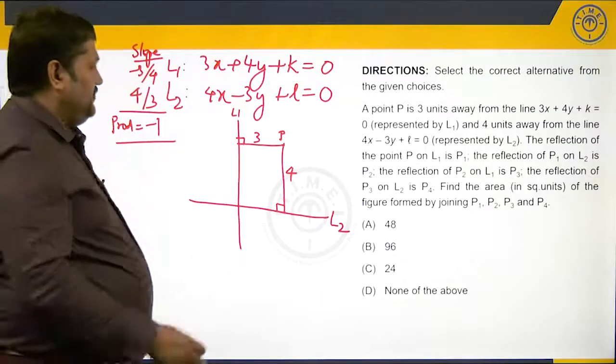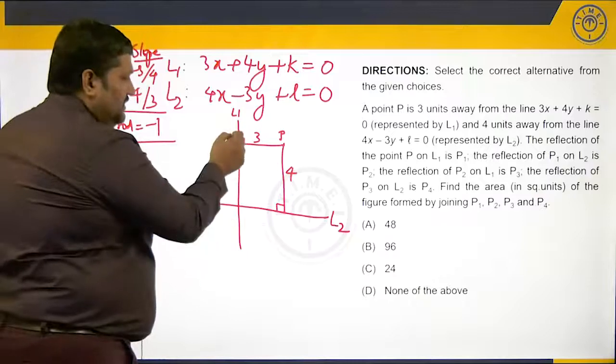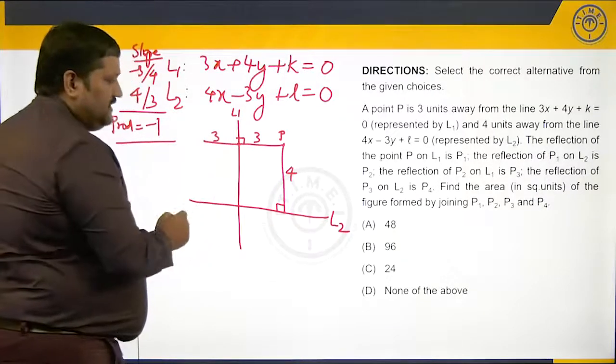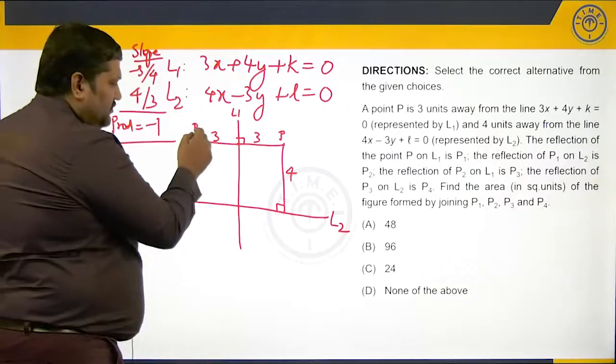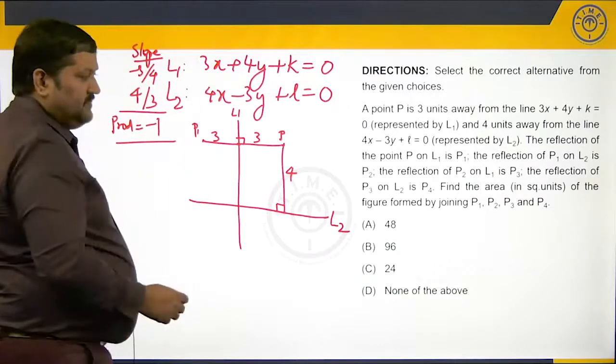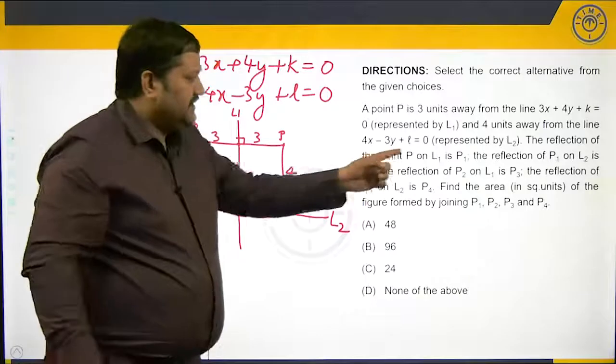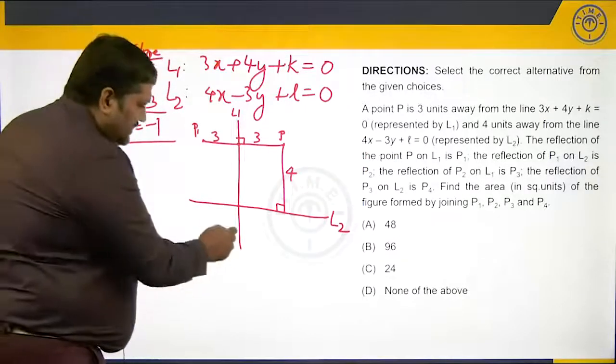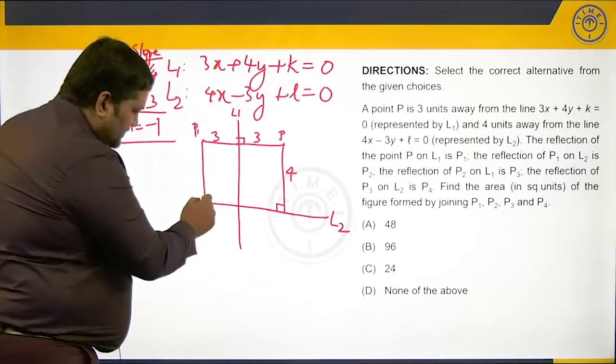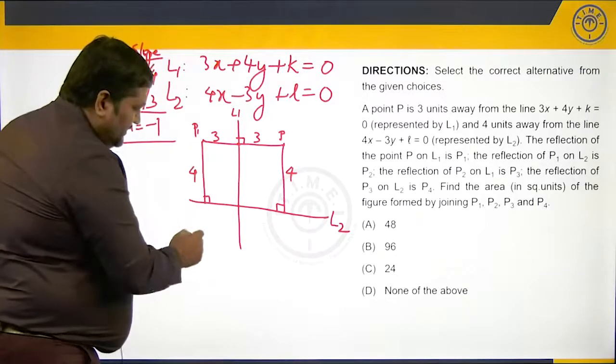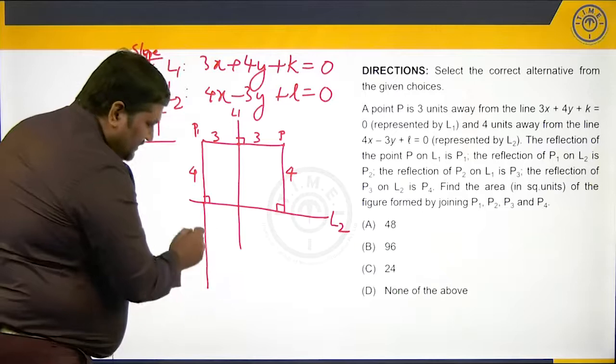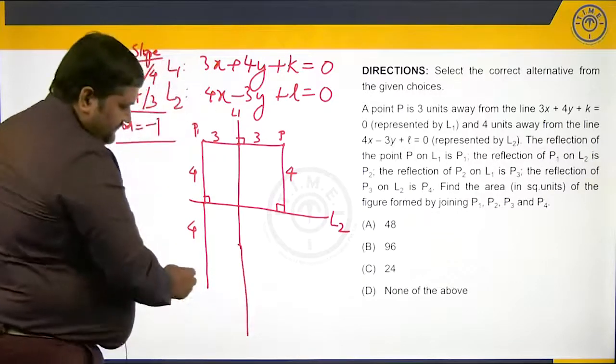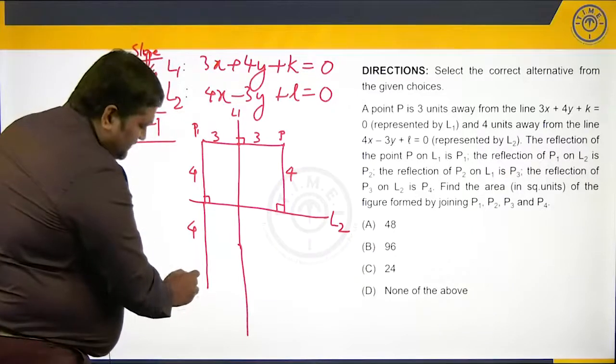So if I reflect P on line 1, the reflection will be 3 units away on the other side, and this is given as P1. Then the reflection of P1 on L2 will be 4 units away from L2, so this will be further 4 units away. Let us extend this line. This is P2.